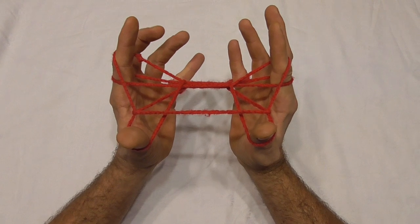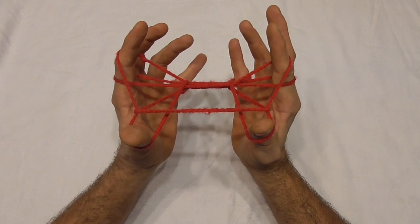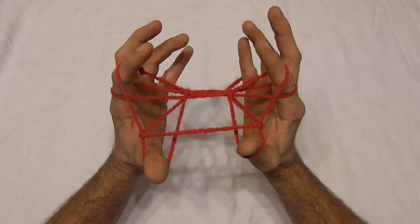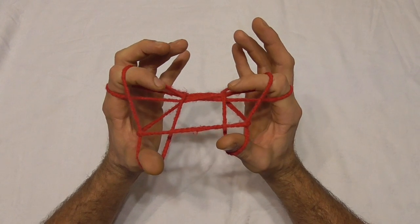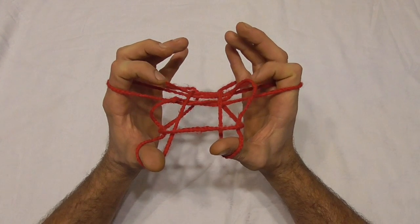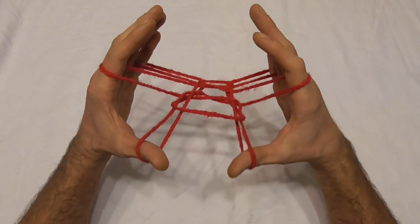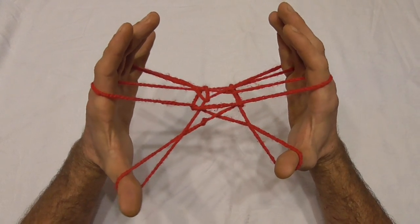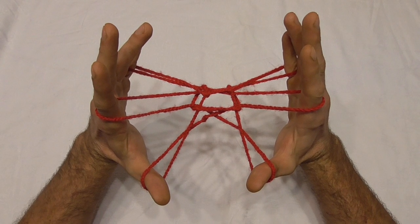Now I want to get rid of my top pointer finger strings. And I can do that just by curling my pointer fingers forwards until that string comes off. And now we can tighten the whole figure up a little bit. So it looks like that.